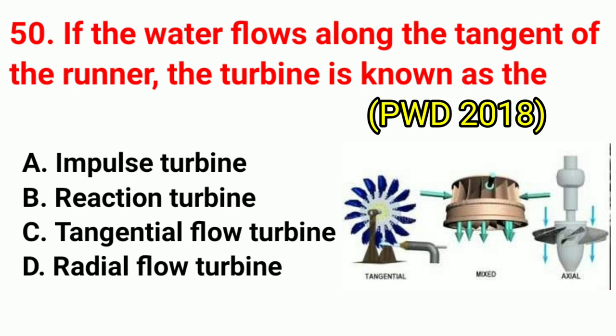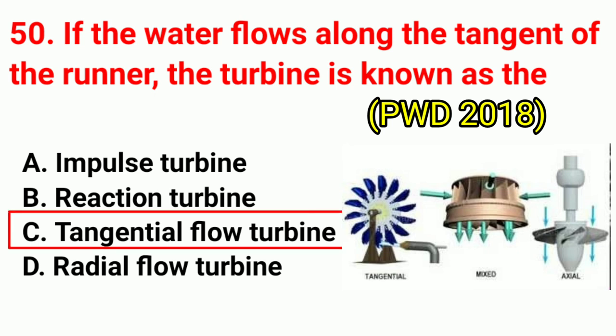Question No. 50. If the water flows along the tangent of the runner, the turbine is known as? Correct answer is option C: tangential flow turbine.